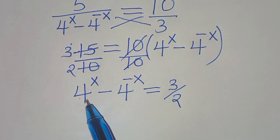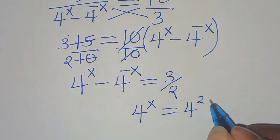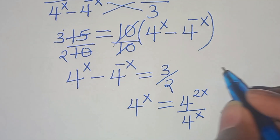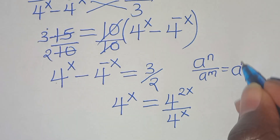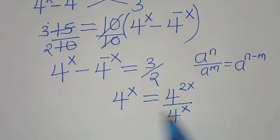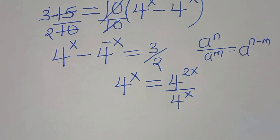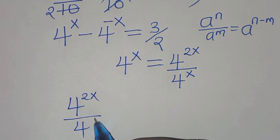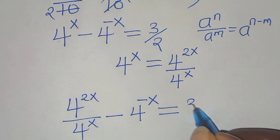Now, 4 to the power of x is the same thing as 4 to the power of 2x divided by 4 to the power of x. Applying the indices identity — a to the power of n over a to the power of m equals a to the power of n minus m — we get 2x minus x, which equals x. So we substitute 4 to the power of x with 4 to the power of 2x divided by 4 to the power of x, giving us 4 to the power of 2x divided by 4 to the power of x, subtract 4 to the power of minus x, equals 3 over 2.